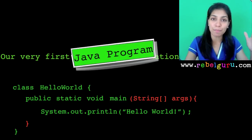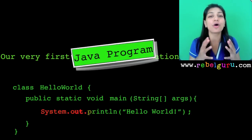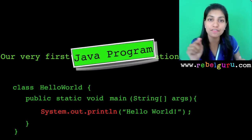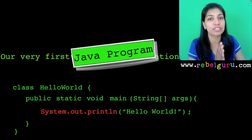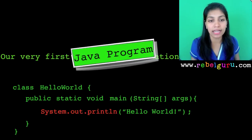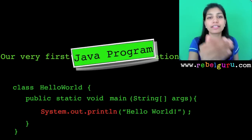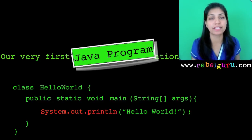That was 'public static void main'. Let's move on to the only line within the main method. After the main, you have opening and closing curly braces, and within them is the only line: System.out.println. System.out.println is used to print things on the screen. This is similar to the cout statement from C++ — whenever you want to print something on the screen, you use System.out.println.